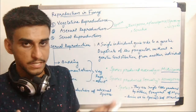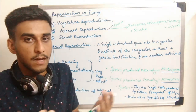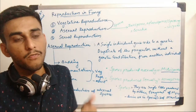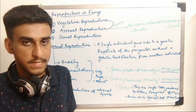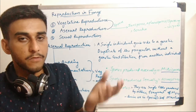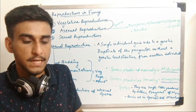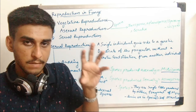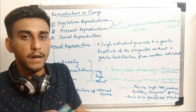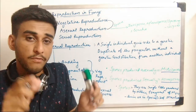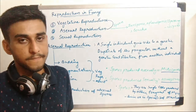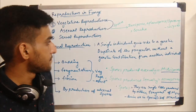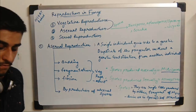Spores are produced in a specialized condition or specialized part, or they are produced by the breakage or fragmentation of mycelia. Mycelium fragments get converted into spores, or spores can be seen in specialized parts which are only meant for production of spores.